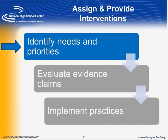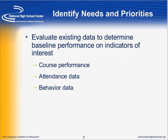We often get asked questions about how to choose interventions, and we've broken this process down into almost three big categories that you need to think about when selecting your interventions. The first is identifying your needs and your priorities. Oftentimes people skip this step and will use interventions they've heard of other people having success with, or that they've heard a lot of talk about. We really encourage people to take the time to identify your needs and priorities to make sure that the interventions or instructional supports you choose have a good match between the needs of your students and the priorities within the school.